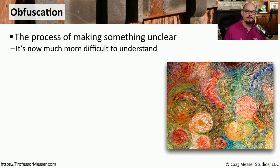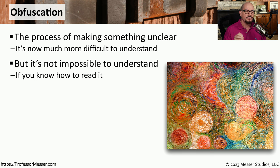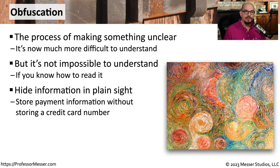Obfuscation is a process where you take something that normally would be very easy to understand and make it much more difficult to understand. One of the interesting aspects of obfuscation is that if you know how the obfuscation is done, you're able to reverse the process and gain access to the original data. With obfuscation, you're effectively hiding information in plain sight, and only if you know how it was hidden would you recognize that there's actually data contained within that object.